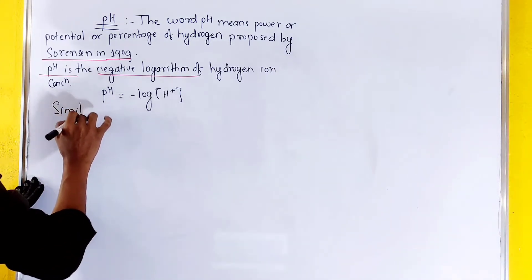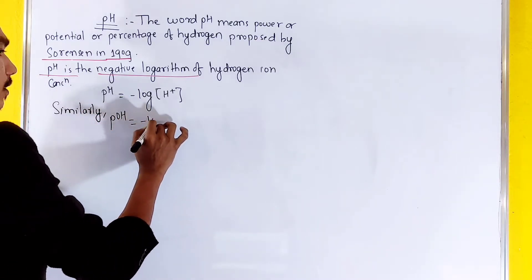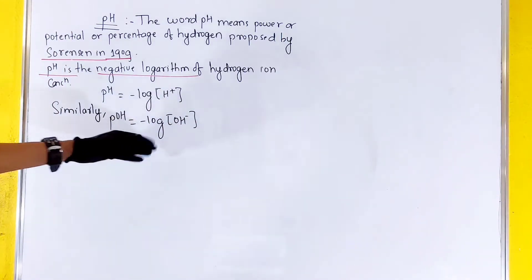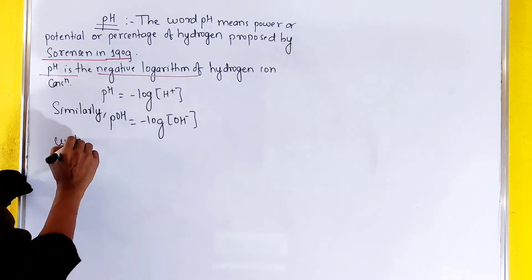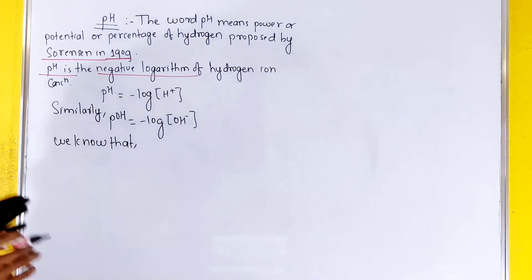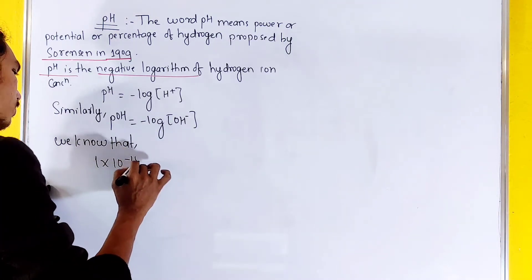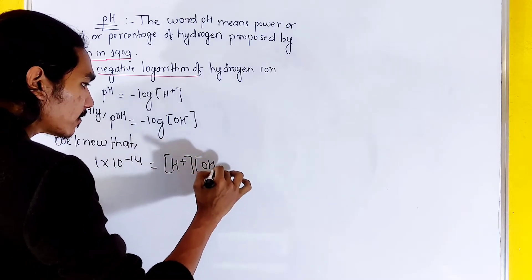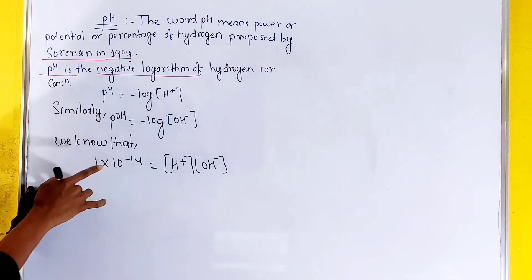Similarly, we will discuss pOH as the negative log of hydroxide ion concentration. We know that the ion product of water, Kw, is equal to 1 × 10^-14, which equals [H+][OH-]. We get this from the auto-ionization of water.